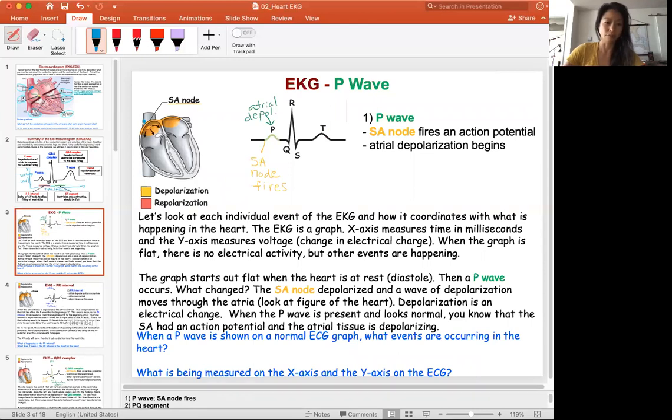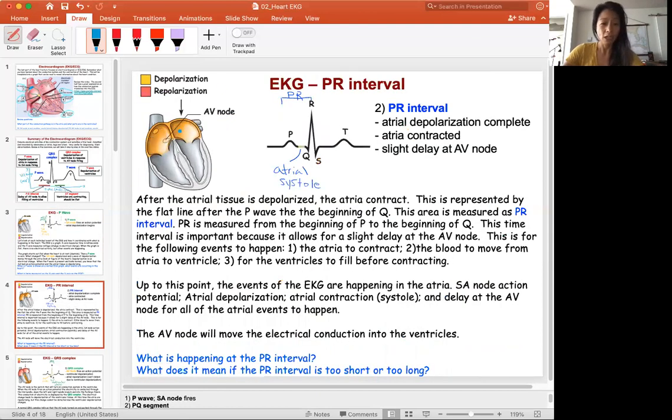Now remember, after you turn on the switch and the atrial tissue is depolarized, let's see what happens next. This is the full depolarization of the atrial tissue, right after the P wave. Now we have a flat line.